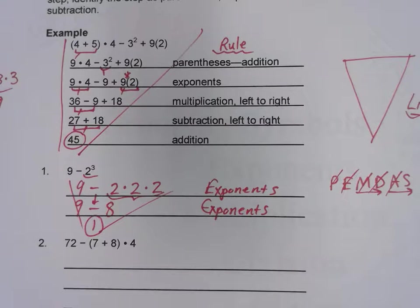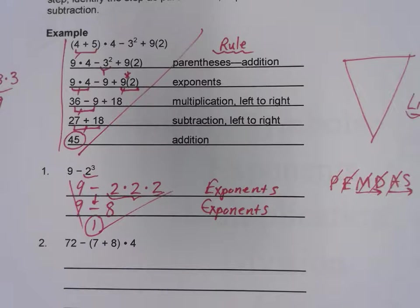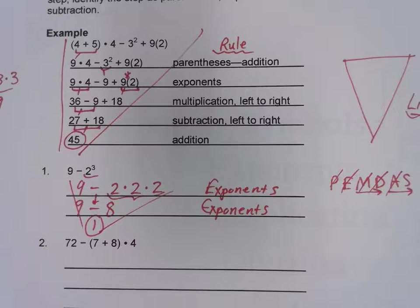Students have told me my videos are pretty boring, so I brought you a joke today. What would you get if you crossed a giant ape with a game of table tennis? King Ping Pong! All right, let's look at the next example.